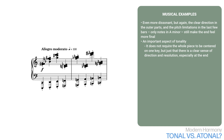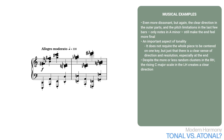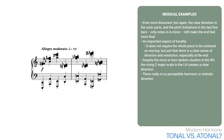Another example. Here, despite the more or less random clusters in the right hand, the rising C major scale in the left hand creates a clear direction. If I make the left hand octaves more random with no clear pattern, listen to what happens. Now there really is no perceptual harmonic or melodic direction. But we can see here that even with random clusters, the clear direction in the baseline can create expectations about where we're going. So, in themselves, pitch limitations to a specific group of notes and consonants or dissonants don't make the music more or less tonal, because neither of these dimensions in themselves creates a clear sense of progression that hints at where the music is going.